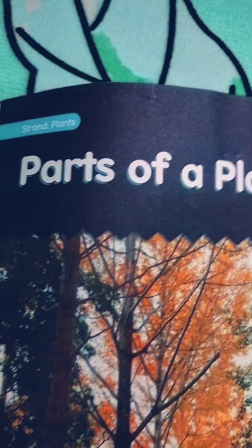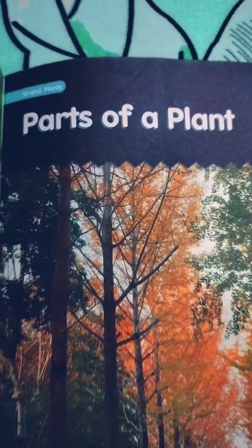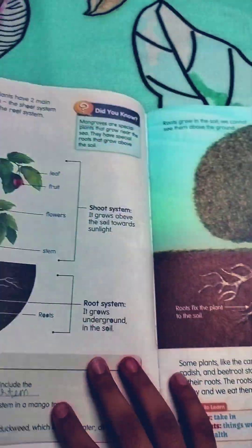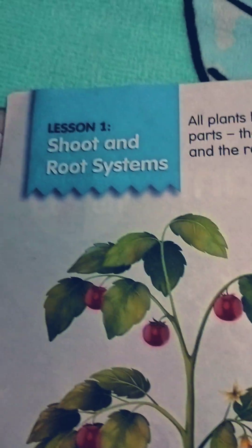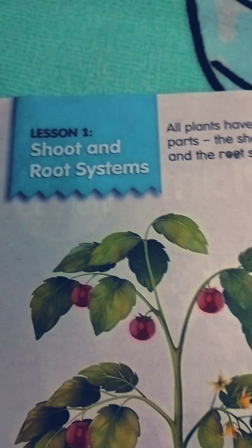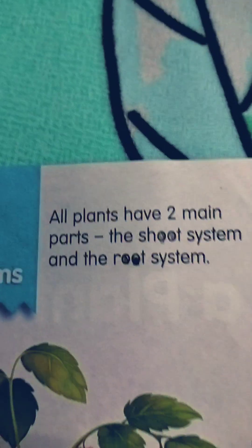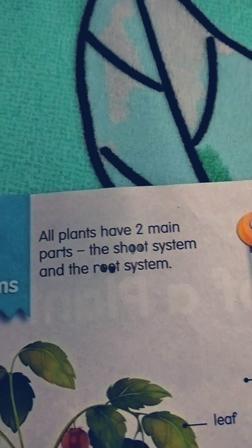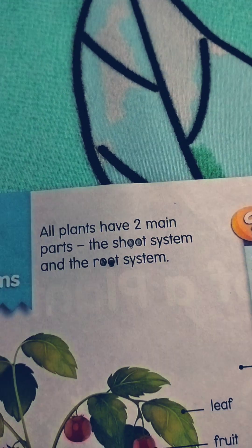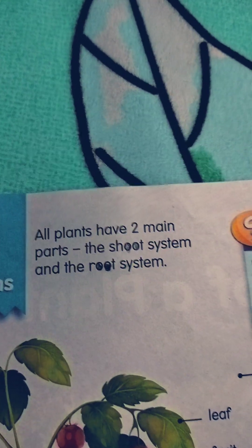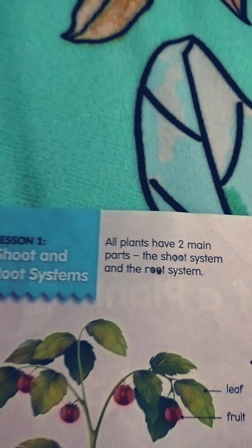Parts of a plant. Shoot and root systems. All plants have two main parts: the shoot system and the root system.